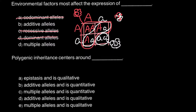Let's consider multiple alleles. I'll use a different example this time. Most of you know the ABO blood group system, where we have three alleles: A, B, and O. These three alleles can make four different blood groups: blood group A, blood group B, blood group AB, and blood group O.